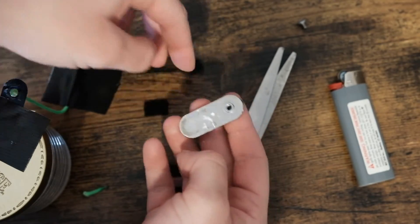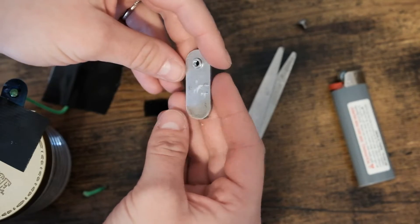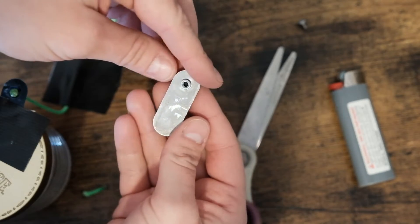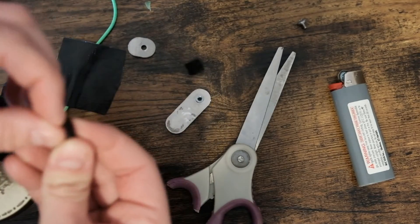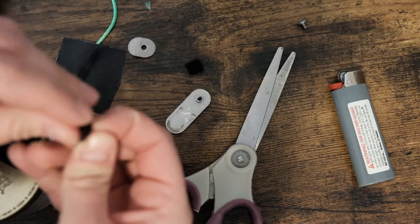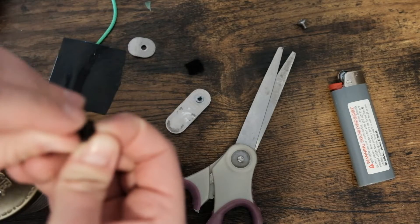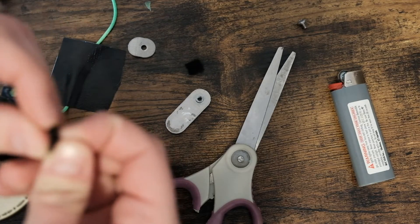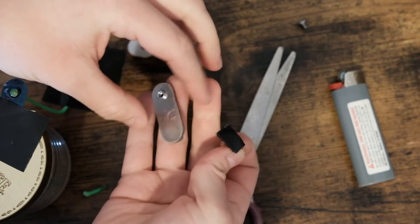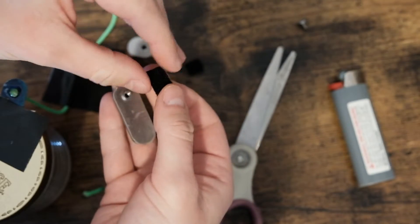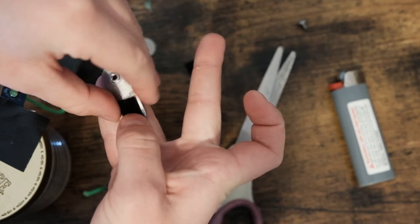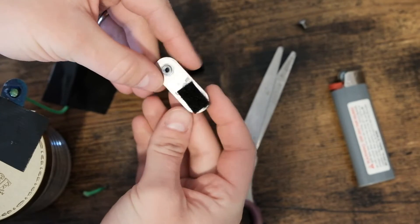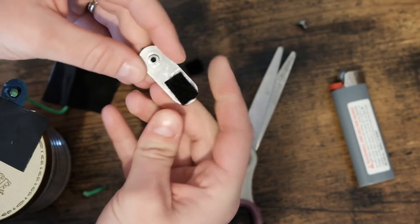And I like to spray paint this black. Just so you have one less shiny thing on your bow. But this one's going to stay silver. So all you got to do is stick this on. Probably should clean it with alcohol too. Just put it this. And you could totally make that look a lot prettier. But that's all I'm going to do.